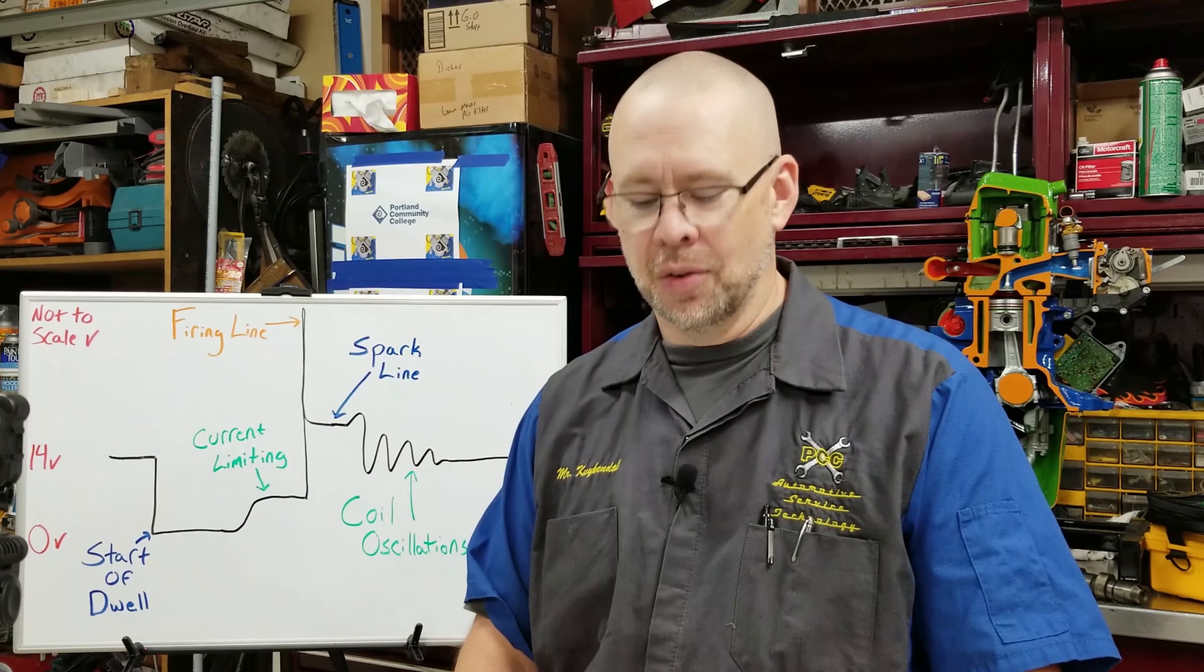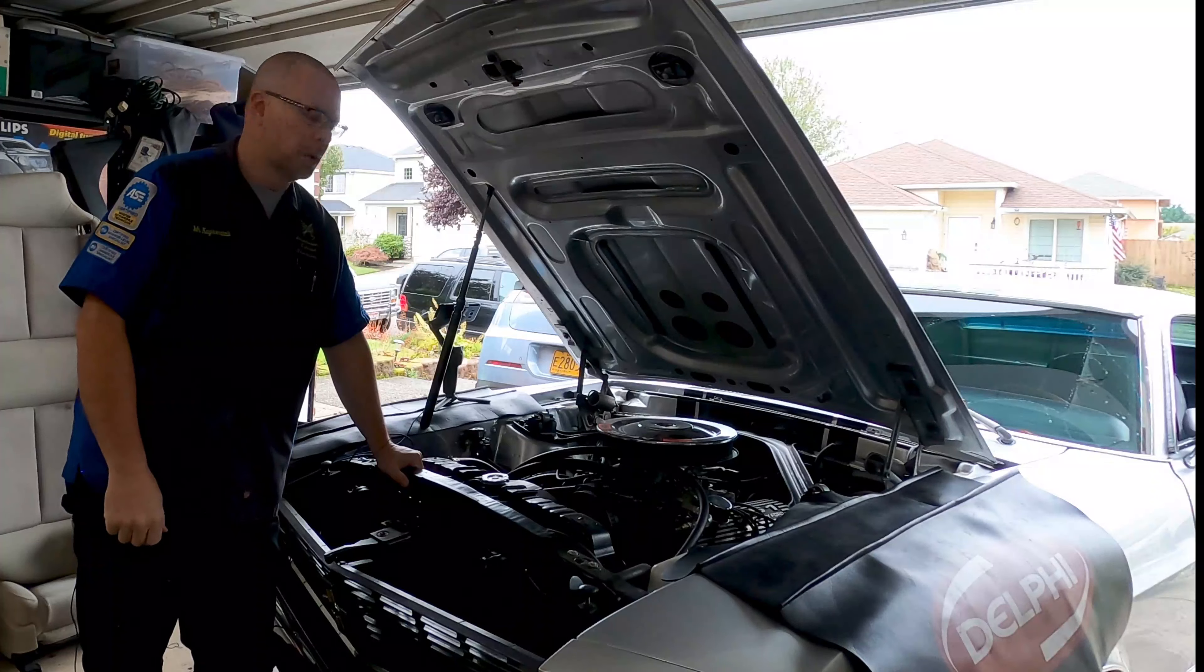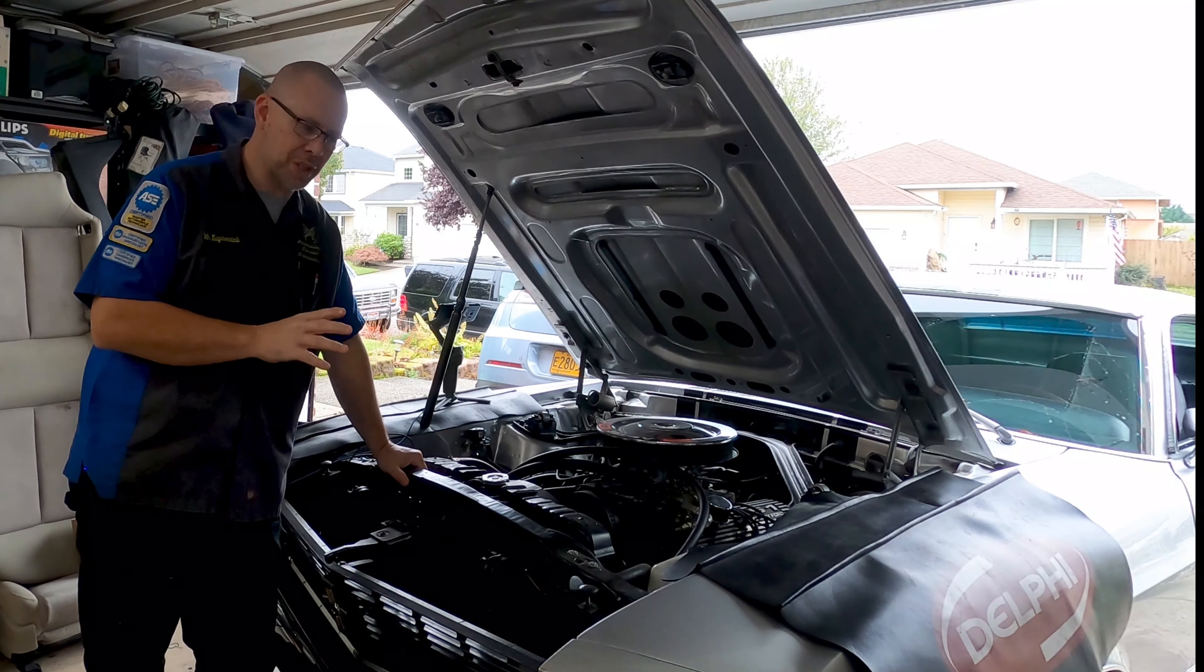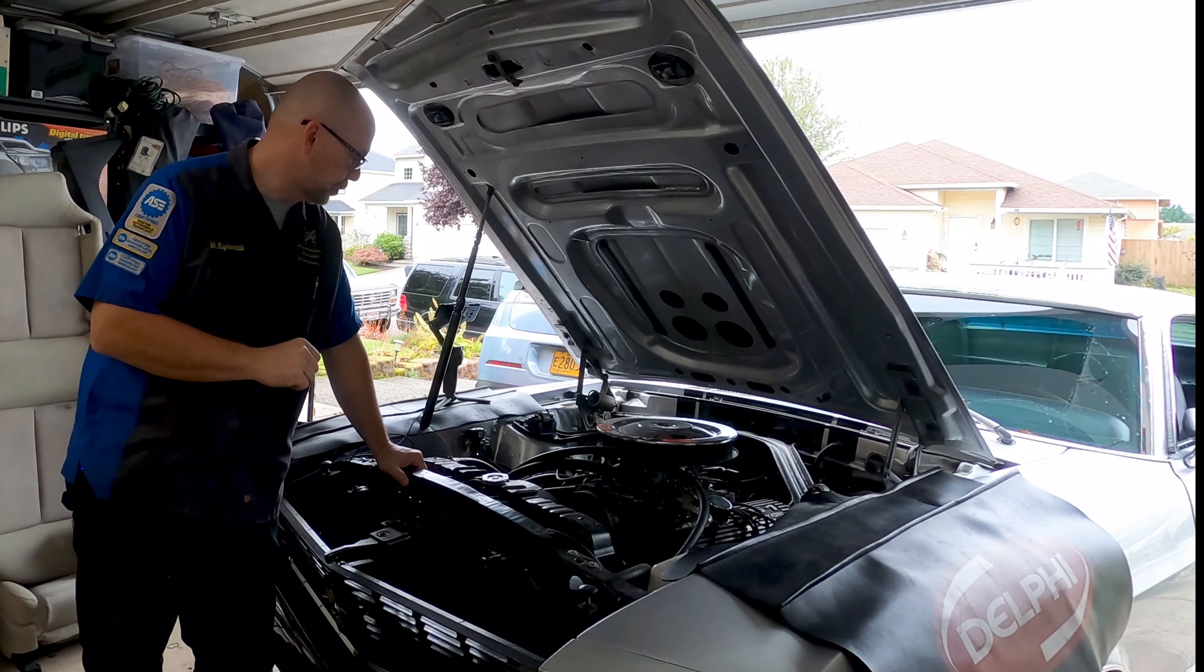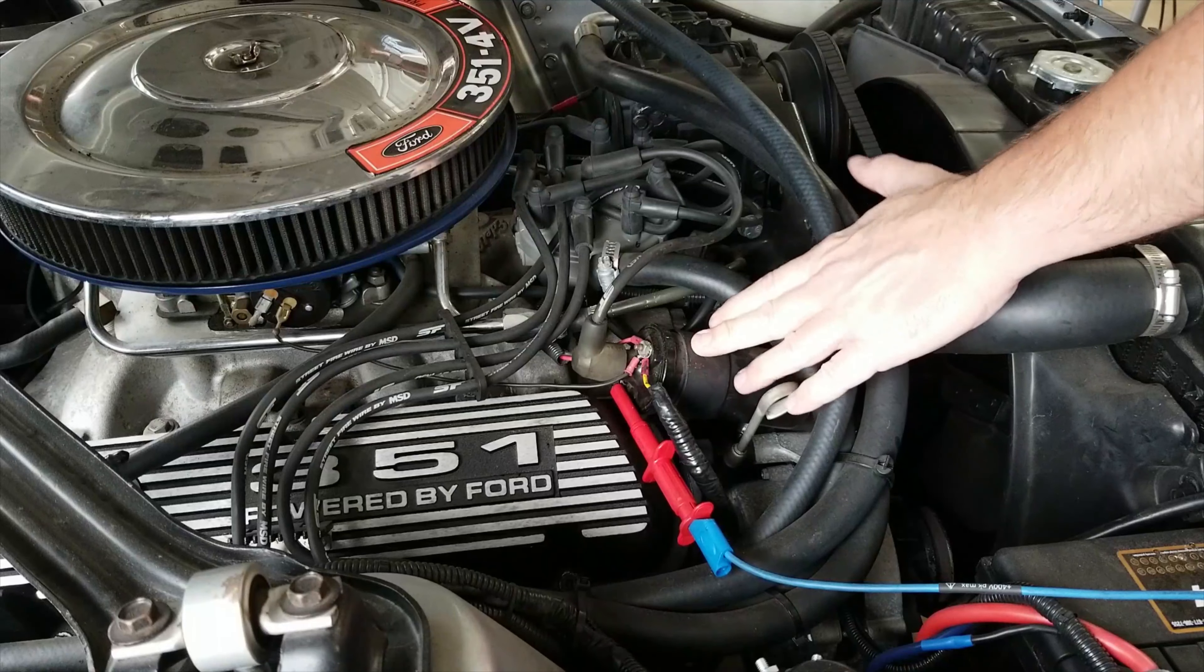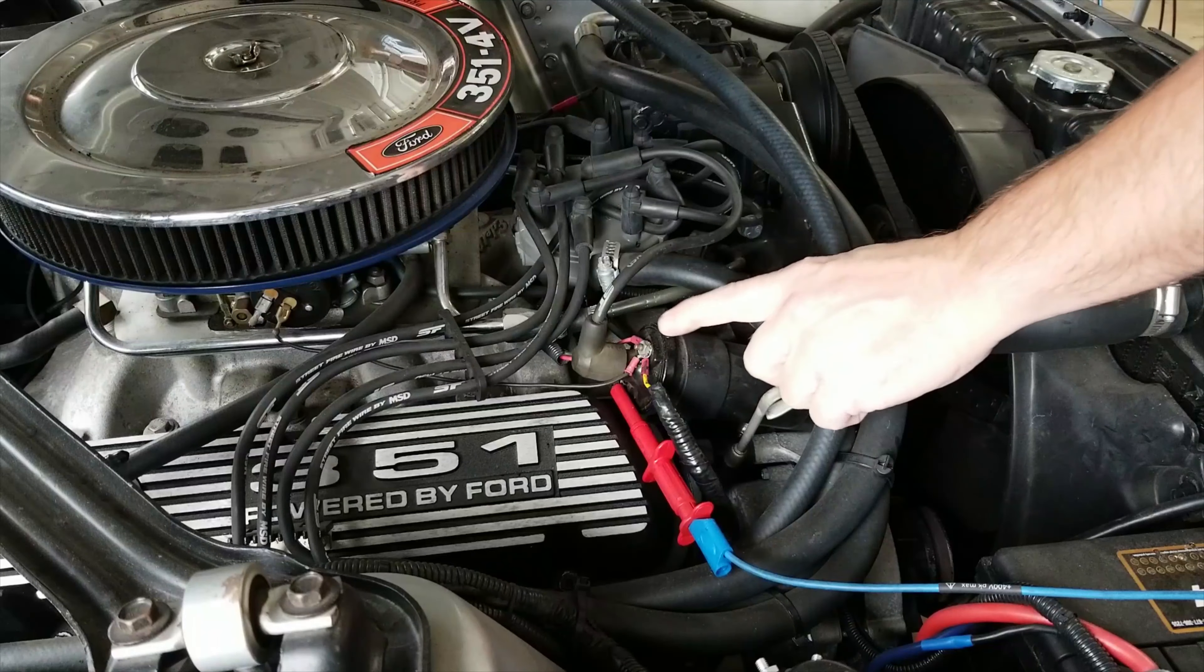First off we'll take a look under the hood and check out and see what a connection actually looks like, so that when we make it back to the shop we can get hooked up on the car and we know where all the places we should hook up the scope are. So we're here under the hood. I picked a car that has some pretty easily identifiable components for hooking this up.